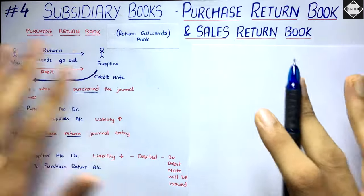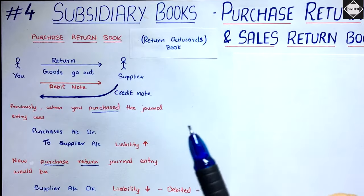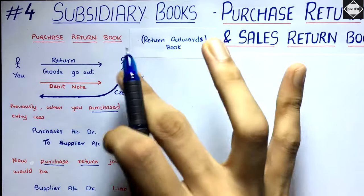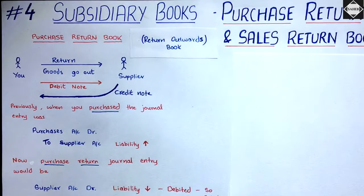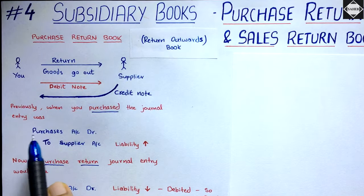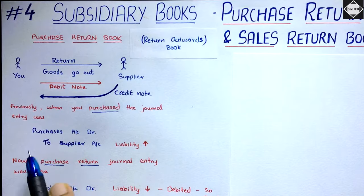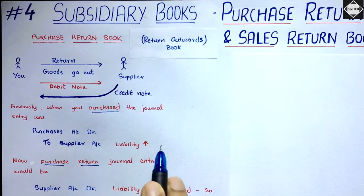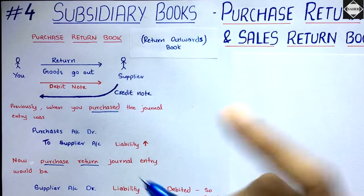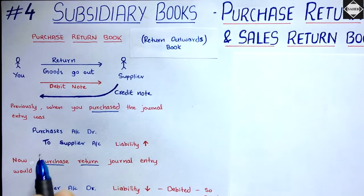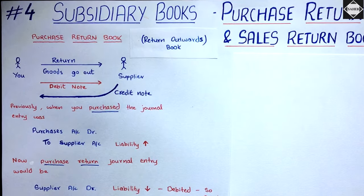Let's start with this example and understand the process of purchase return. Let's say you purchased 10,000 worth of goods from your supplier Chandu on credit. The journal entry of this credit purchase is: Purchase account debit 10,000, to Chandu 10,000 — because liability is increasing, you have to pay Chandu 10,000.